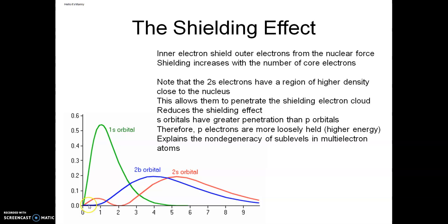Now notice the 2s electrons have this little lump of density in closer to the nucleus. We refer to that again as penetration. The 2s electrons can penetrate through the shield and therefore are going to be more tightly held. The 2p electrons have less penetration. That means they're more shielded and more loosely held, and that's why you'll recall when we were giving away our electrons, the p's went first because they're more loosely held.